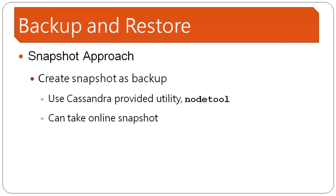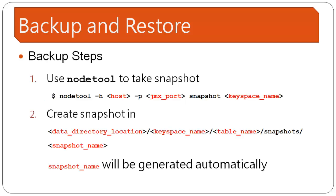Let's have a detailed look at the backup steps. To take a Snapshot, we'll use the command line utility nodetool with the syntax as shown on the screen. The Snapshot Image will be created deep down under the data directory of Cassandra with the structure as shown on the screen. Now let's create some test data to illustrate the backup steps with a demo.